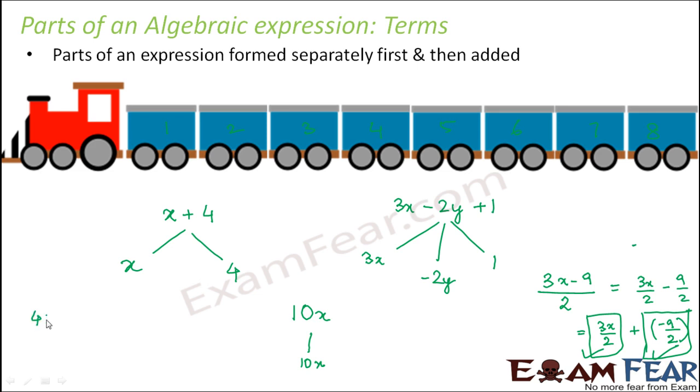Similarly, if you have an expression like this, 4y cube plus 3. So here this is one term, this is another term. So this is one term and this is another term. So in this fashion, just by looking at which are those parts which are added to give that expression, you can find out the terms of an expression.